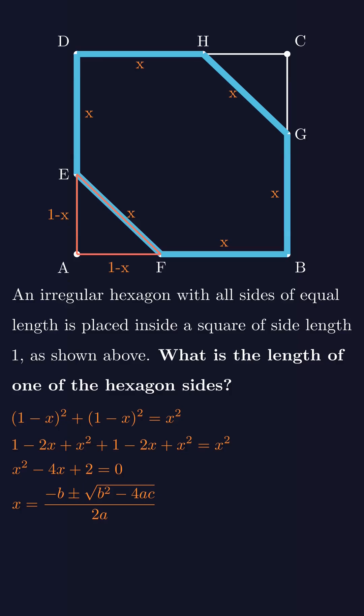In this case, a is 1, b is negative 4, and c is 2. Plugging in those values, we find the two roots of the equation.